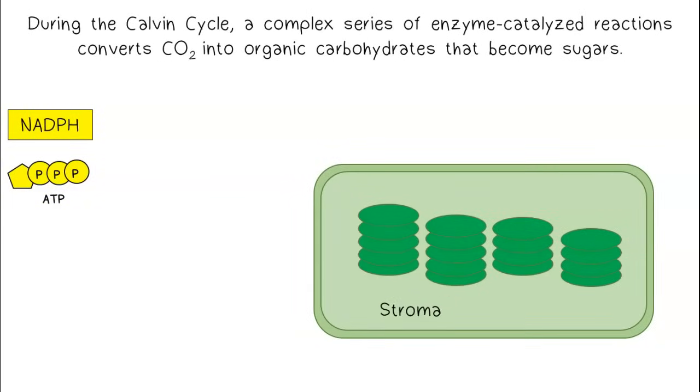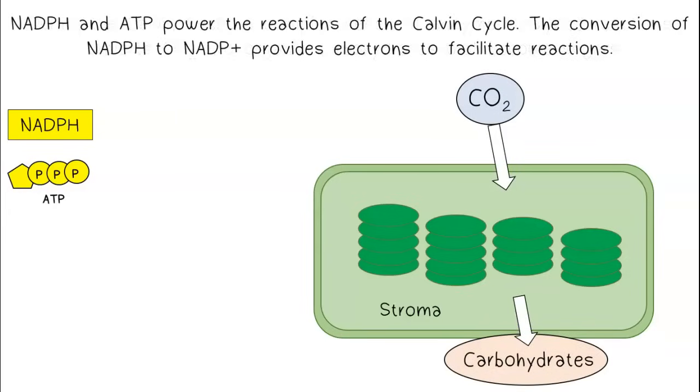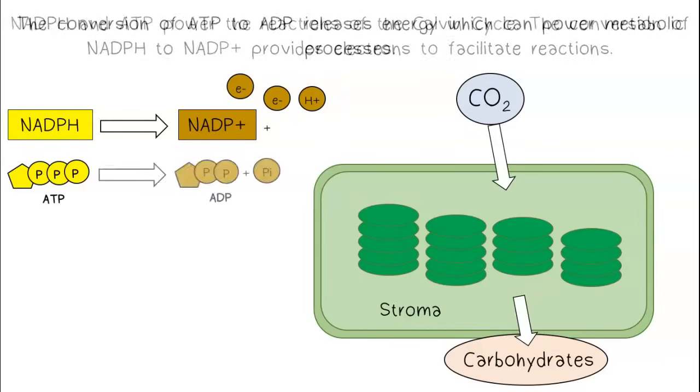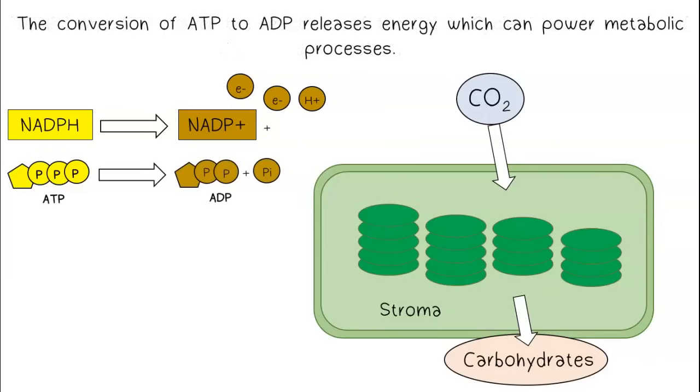During the Calvin cycle, a complex series of enzyme-catalyzed reactions converts CO2 into organic carbohydrates that become sugars. NADPH and ATP power the reactions of the Calvin cycle. The conversion of NADPH to NADP+ provides electrons to facilitate reactions. The conversion of ATP to ADP releases energy, which can power metabolic processes.